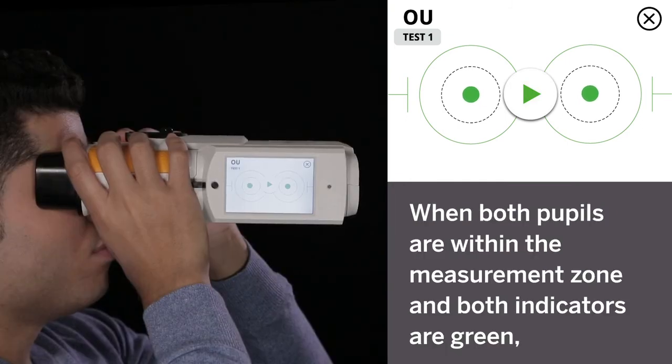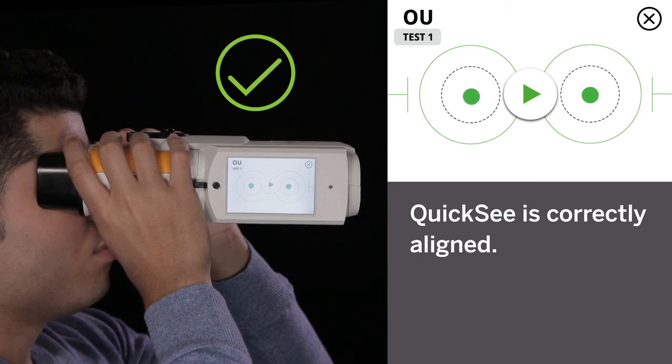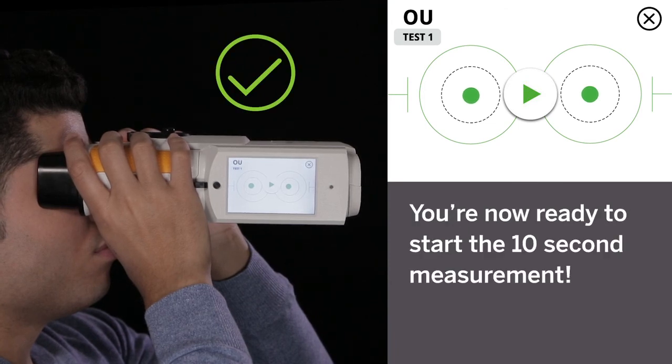When both pupils are within the measurement zone and both indicators are green, QuickSee is correctly aligned. You're now ready to start the 10-second measurement.